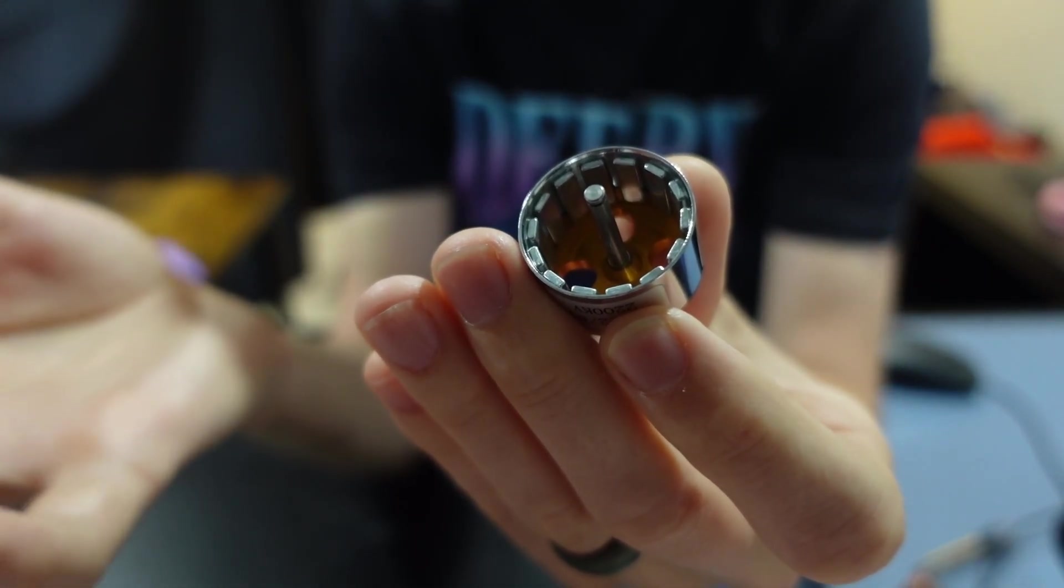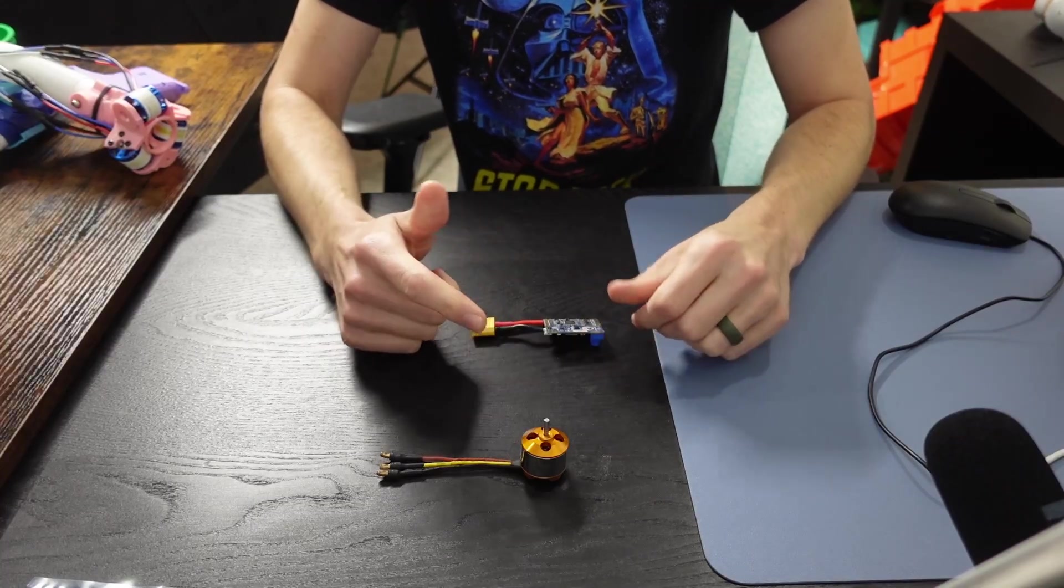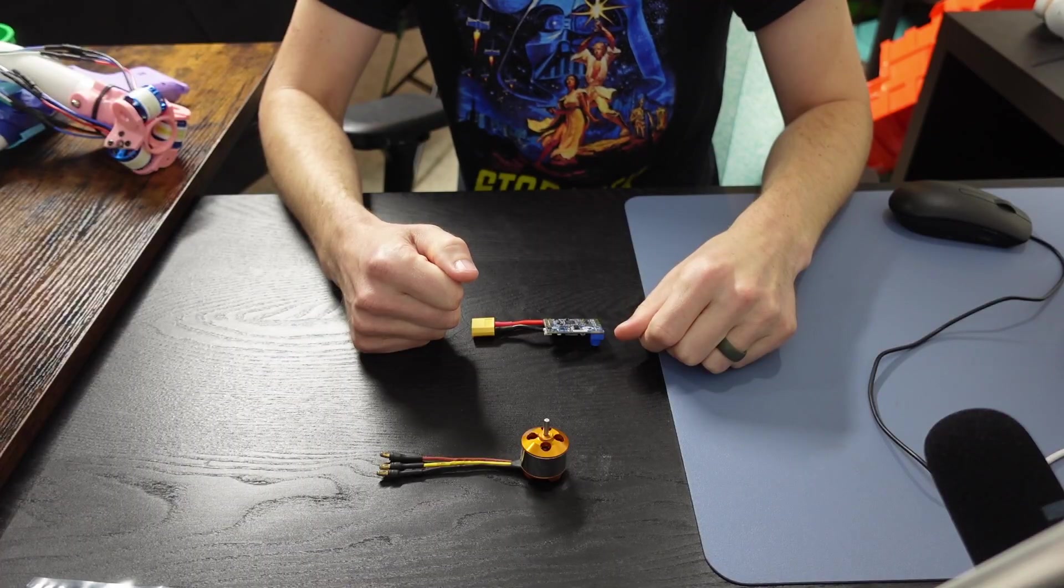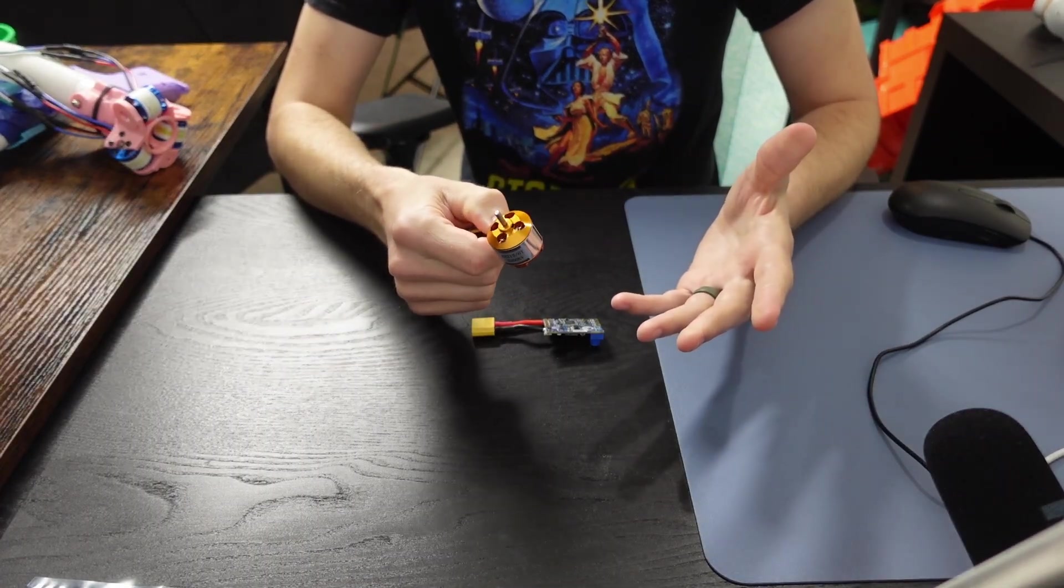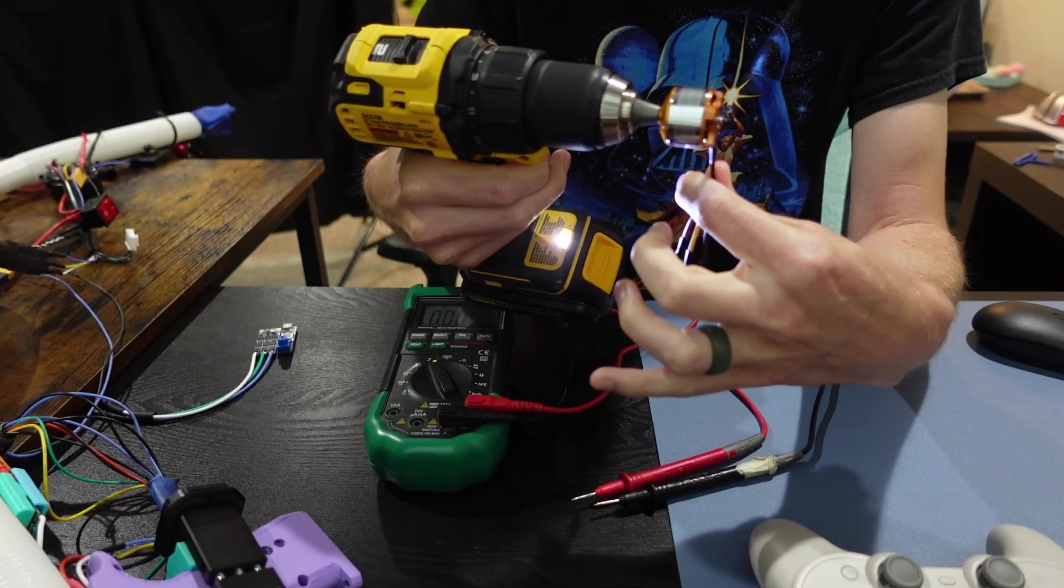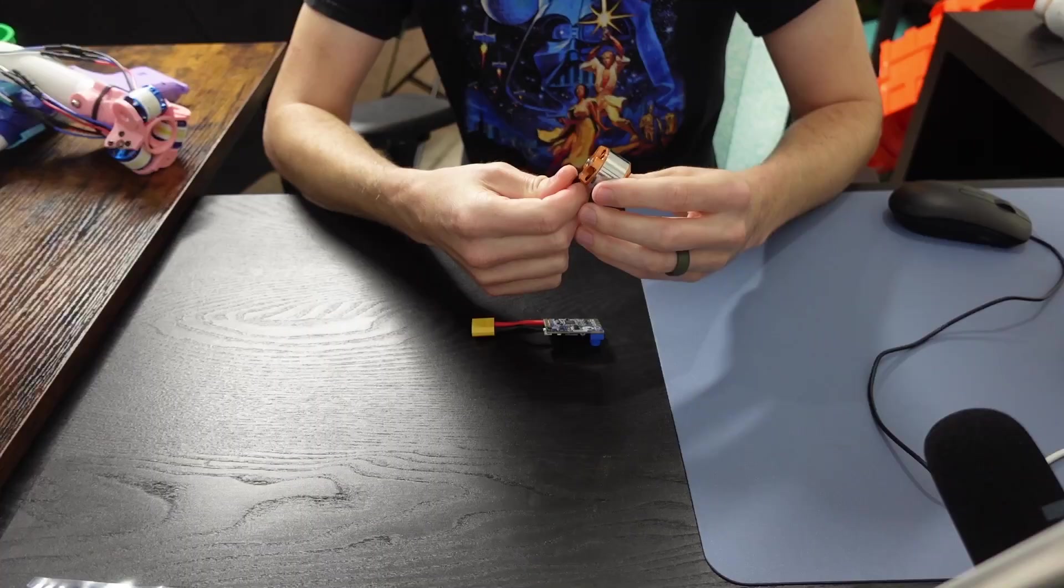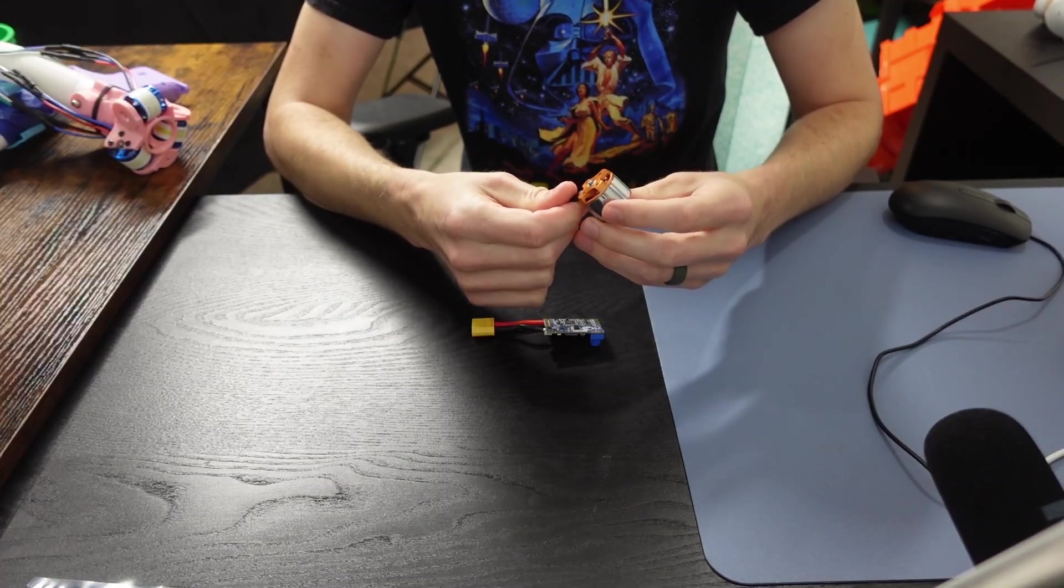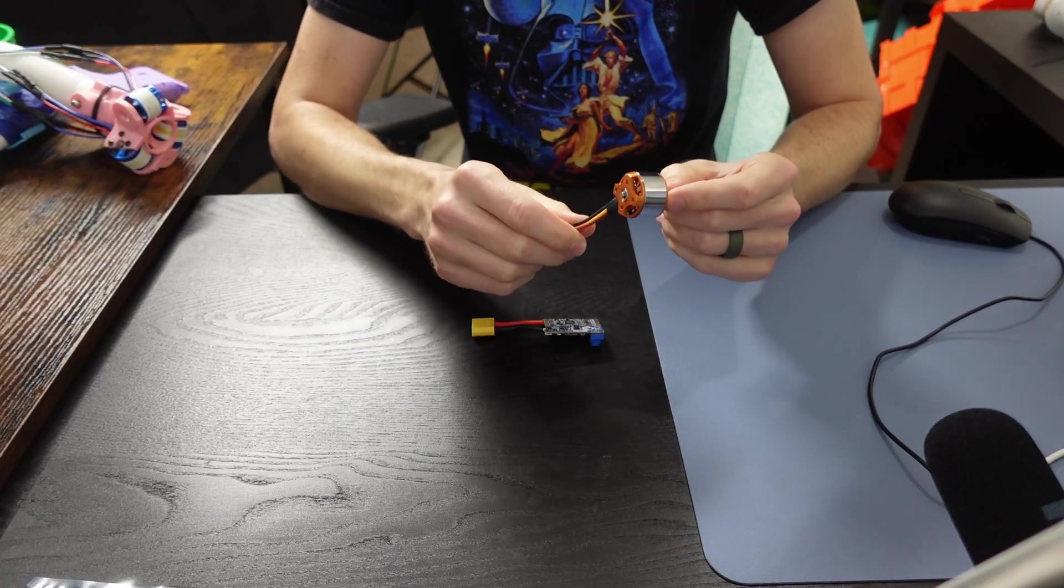So this is a good time to move on to characterizing the delta connected BLDC motors. And if you watched the last video, it's going to be very similar. Figuring out the pole pairs and KV is exactly the same. The only things that are different are how we calculate the phase resistance and inductance.